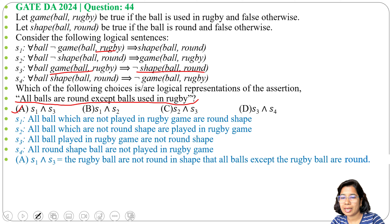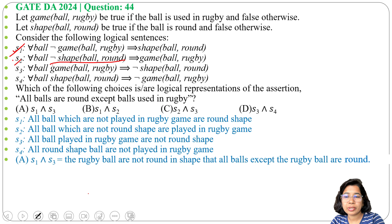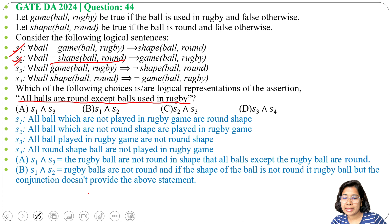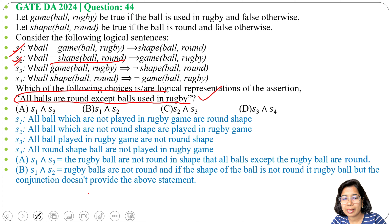Option B is S1 and S2. S1 states: all balls not played in rugby game are round. S2 states: all balls which are not round are played in rugby game. S1 is correct by itself and S2 is correct by itself, but their conjunction is not the same as 'all balls are round except balls used in rugby.' Rugby balls are not round, and if the shape of a ball is not round it is a rugby ball, but their conjunction does not capture the above statement. So S1 and S2 is not correct.